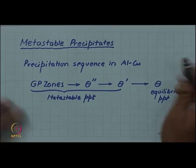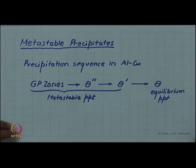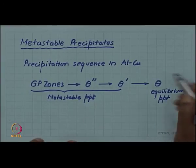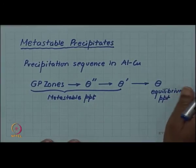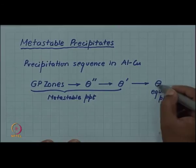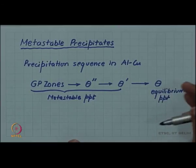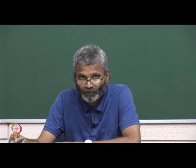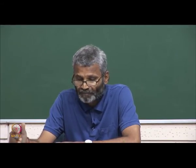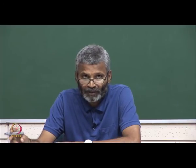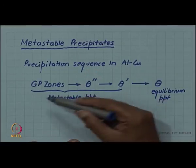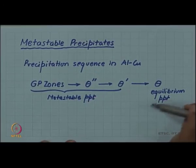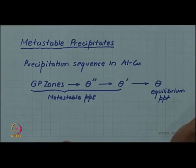However, we do not want to get into the details of this in the present course. I had assumed — wrongly so — that theta was the precipitate causing hardening. But the basic principles we discussed about how the precipitate causes obstruction in the motion of dislocations, and how they relate to the phase diagram and TTT diagram, are applicable to metastable precipitate formation and the hardening mechanism as well.